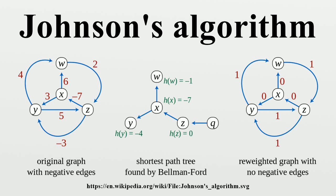Since the reweighting adds the same amount to the weight of every S-T path, a path is a shortest path in the original weighting if and only if it is a shortest path after reweighting.